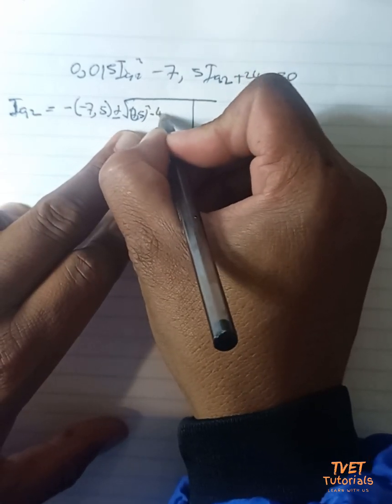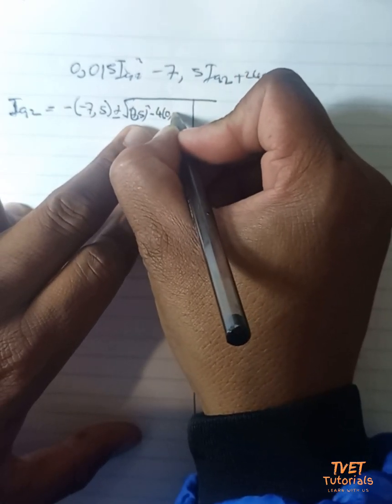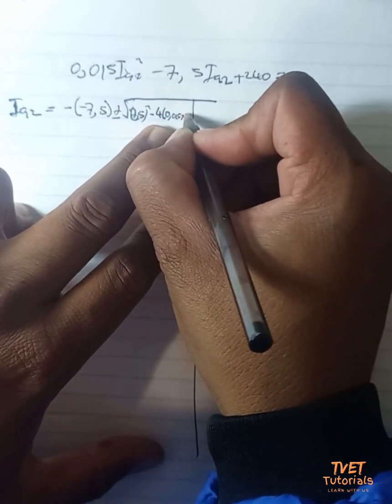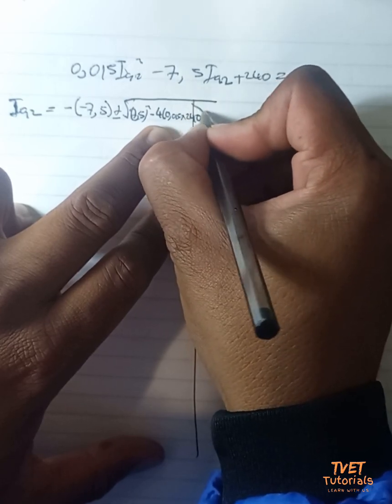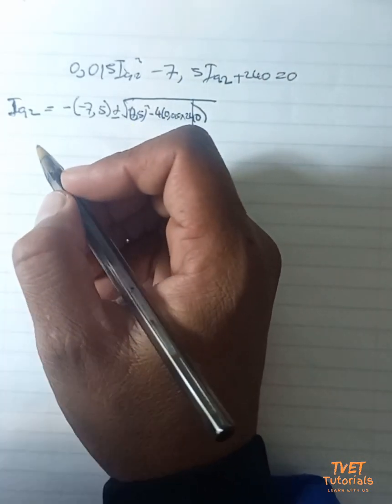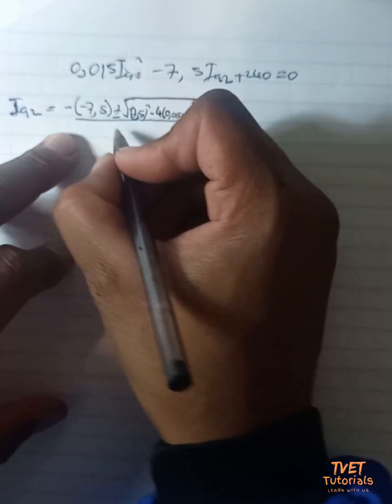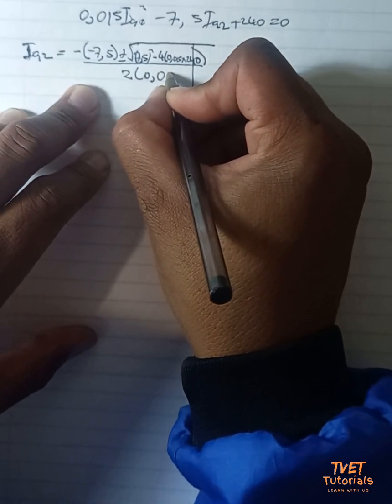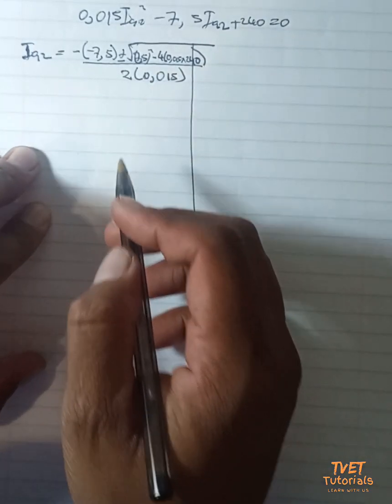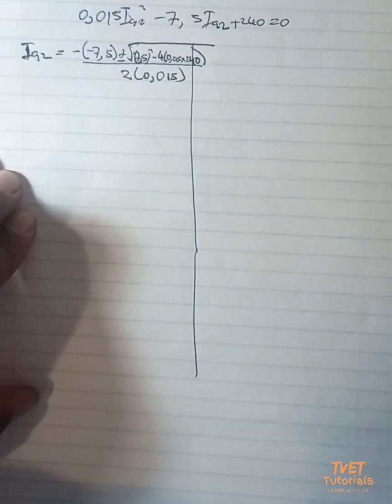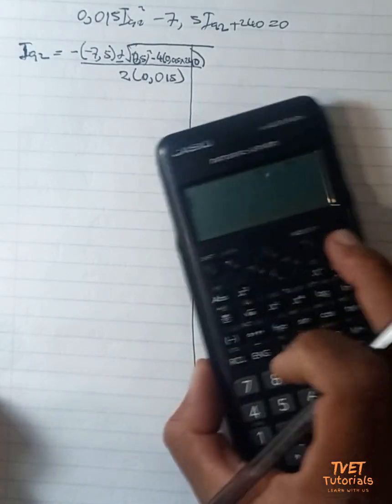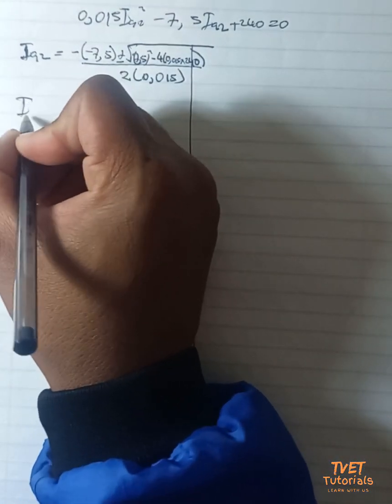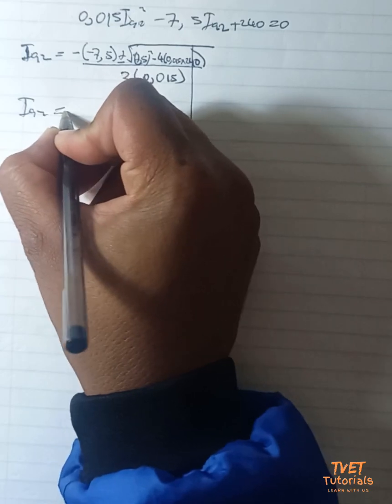minus 4 times 0.015 times 240, divided by 2a which is 2 times 0.015. If we punch that in your calculator you will end at this conclusion: